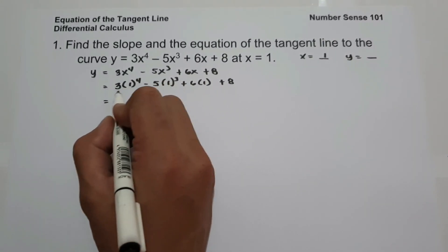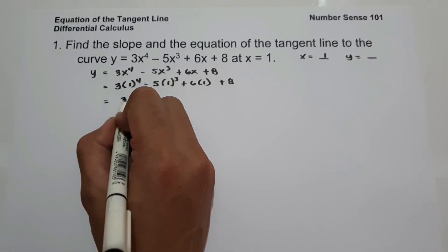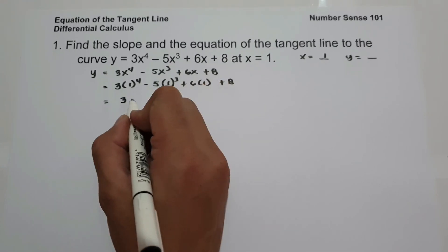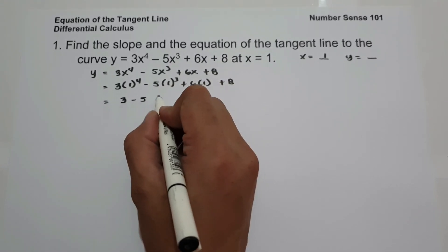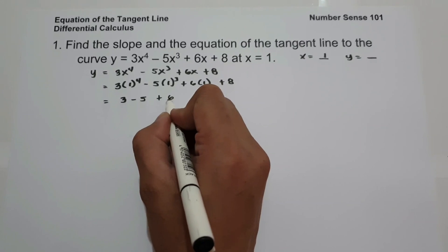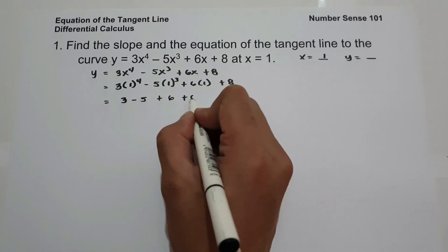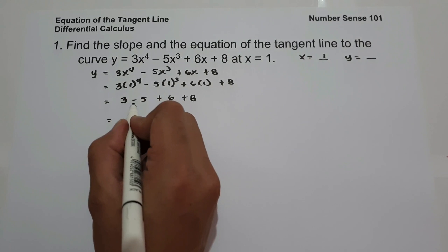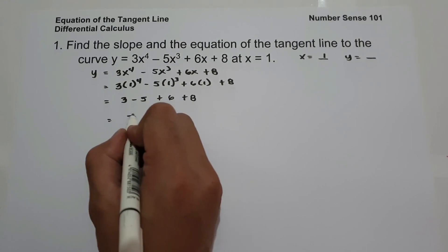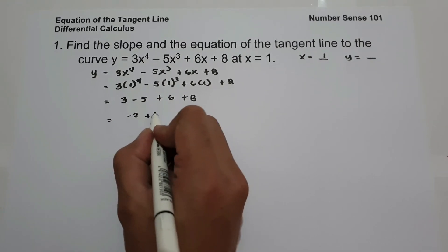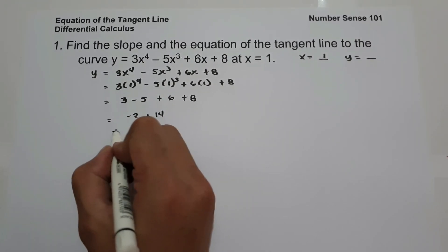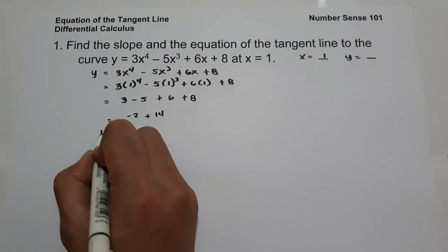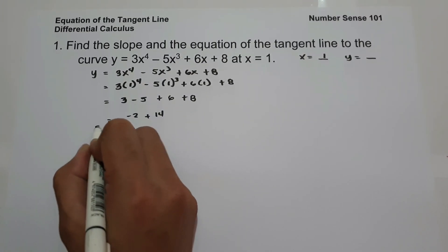1 raised to 4 is 1, times 3 is 3. And 1 raised to 3 is also 1, times negative 5 is negative 5. And 6 times 1 is 6, plus 8. Then 3 minus 5 is negative 2, and 6 plus 8 is 14. And negative 2 plus 14 is 12. So the value of y is 12.